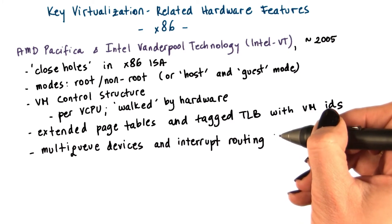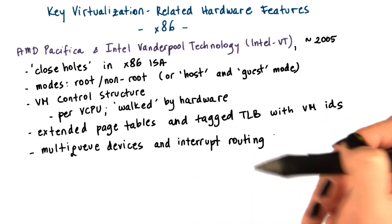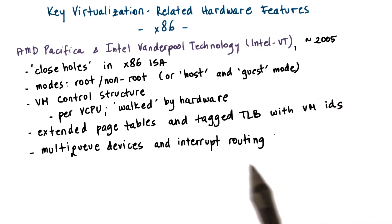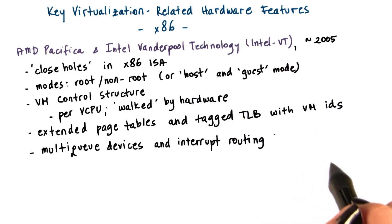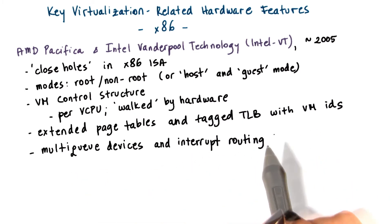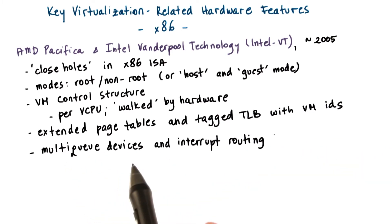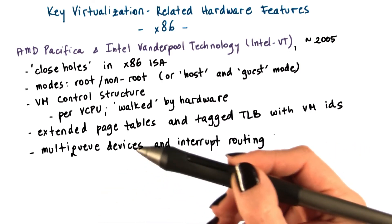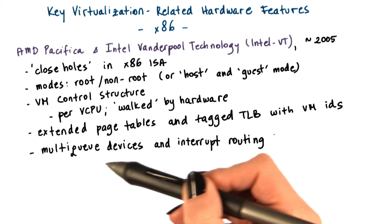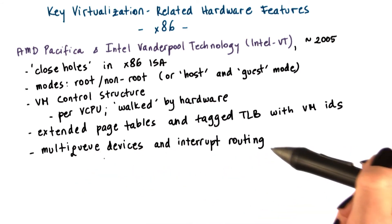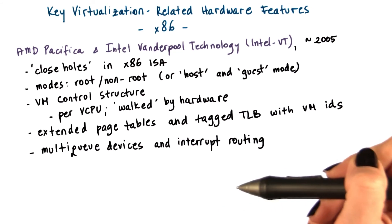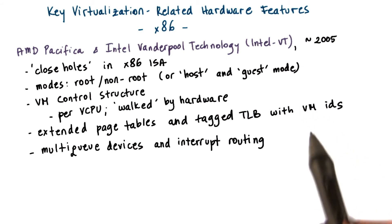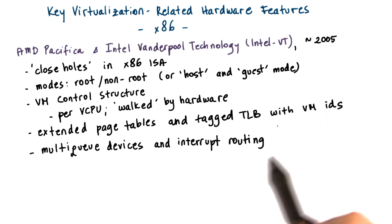Hardware was also extended to add better support for IO virtualization, including modifications to both the processor and chipset, as well as device and system interconnect capabilities. Examples include multi-queue capabilities on devices — where a device has multiple logical interfaces, each usable by a separate VM — and better support for interrupt routing, so that when a device needs to deliver an interrupt to a specific VM, it interrupts the core where that VM is executing and not some other CPU.